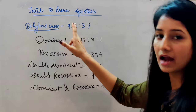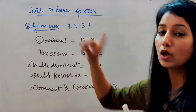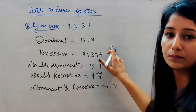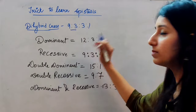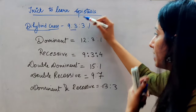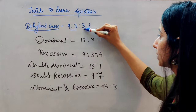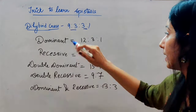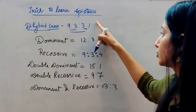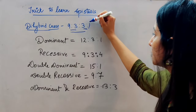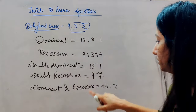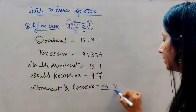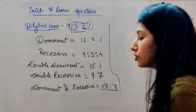To summarize the epistasis ratios: in dominant epistasis, we add 9 plus 3 to get 12:3:1. In recessive epistasis, the ratio is 9:3:4. In double dominant epistasis, we get 15:1. In double recessive epistasis, it is 9:7 (3+3+1 combined). You can easily learn these epistasis ratios using this pattern.